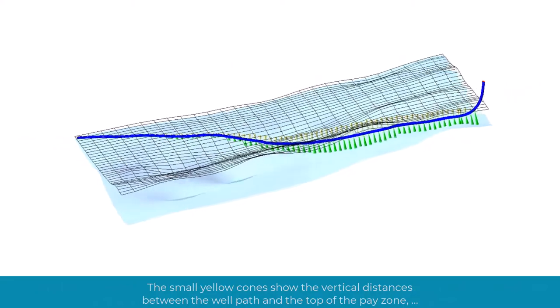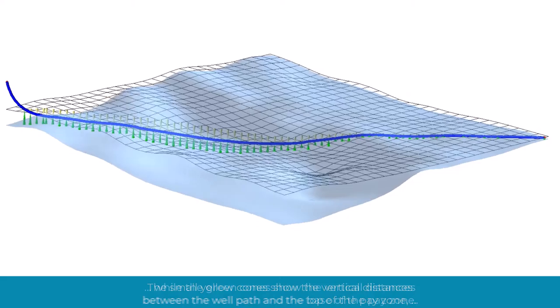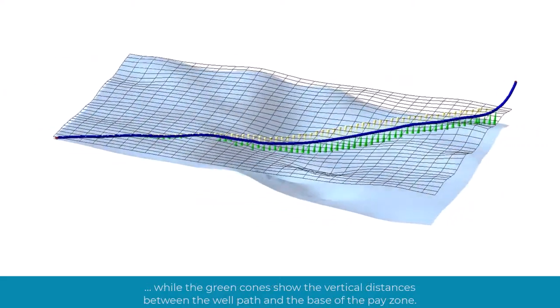The small yellow cones show the vertical distances between the well path and the top of the pay zone, while the green cones show the vertical distances between the well path and the base of the pay zone.